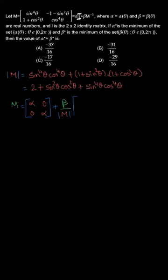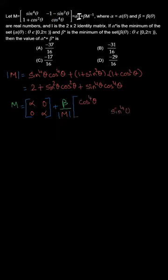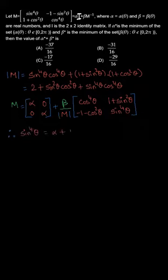For a 2×2 matrix, the adjoint is obtained by swapping the main diagonal elements. So cos⁴θ takes the place of sin⁴θ and sin⁴θ takes the place of cos⁴θ, with the off-diagonal elements negated.